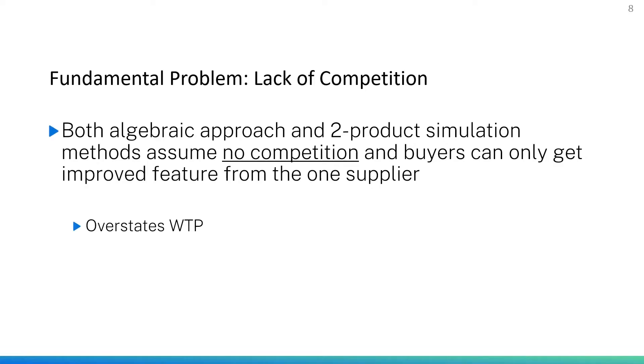Sawtooth Software has been in this business for over 30 years and as leaders in the conjoint analysis space, we wanted to get willingness to pay right and make it very easy to use our software to calculate willingness to pay for features in your conjoint analysis study. The fundamental problem we believe is the lack of competition assumed in the previous two approaches. Both approaches assume the firm has a monopoly with no additional competitive offerings, and this overstates willingness to pay.